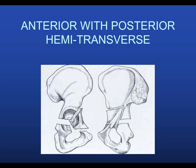Anterior column with posterior hemitransverse — the anterior column fracture can exit at a variety of levels, here or all the way up here, so there are different places where that anterior column line fractures. As opposed to the T-shaped fracture, you typically have minimal displacement posteriorly. So usually this acts like an anterior column fracture, but then there's also this hemitransverse in the posterior column, which usually is not that displaced. So in most cases these are treated anteriorly.